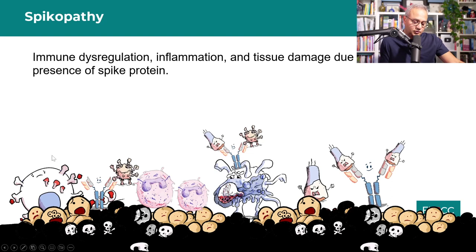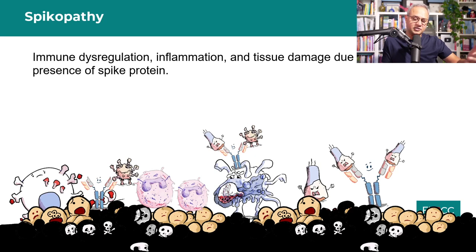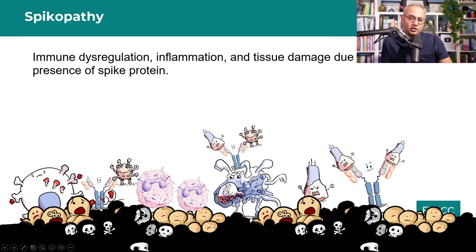Starting from the left of the diagram: a cell with messenger RNA or infected is making spike proteins, which come out and cause inflammation wherever they go. Next to it is an antibody bound to a virus — with circulating spike protein, whether from a vaccine or virus — forming an antigen-antibody complex that has deposited on the tissue. This is visible on the right side of the diagram as well.